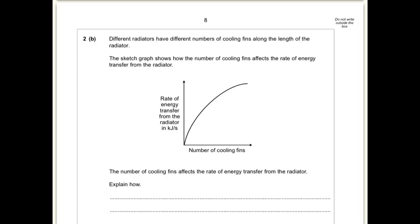So different radiators have different numbers of cooling fins along the length of the radiator. The sketch graph shows that the number of cooling fins affects the rate of energy transfer from the radiator. The number of cooling fins affects the rate of energy transfer. Explain how. Well, what does a fin do? It's like the ones at the back of your radiator that you might have at home or in the classroom. They increase the surface area for one mark, and that increases the rate of energy transfer. Or you can say that more fins mean a greater rate of energy transfer. So one mark for the fins increase the surface area, and the second mark, they increase the rate of energy transfer, the rate of heat transfer.